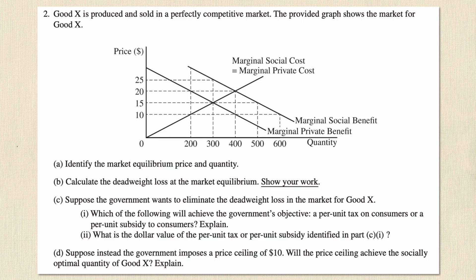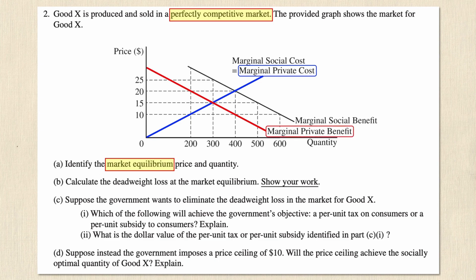Let's start by solving question A, which says to identify the market equilibrium price and quantity. The question tells me it's a perfectly competitive market, so in order to find the equilibrium I'm going to look at the marginal private cost curve, which I've highlighted in blue, and see where it intersects the marginal private benefit curve, highlighted in red. These are the private curves and this is what firms would use to find equilibrium price and quantity.